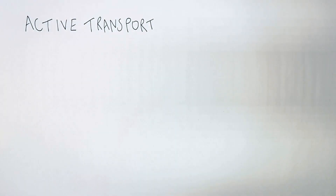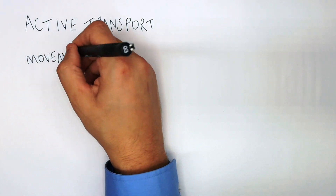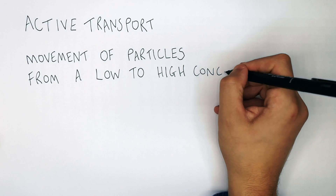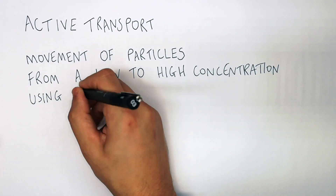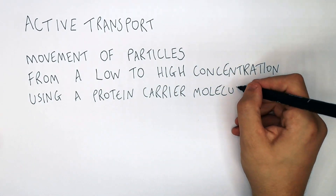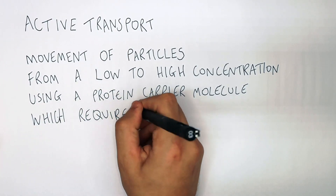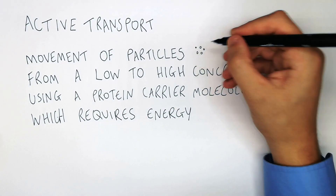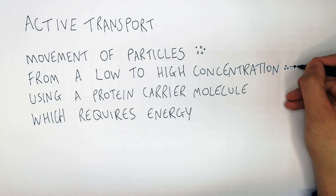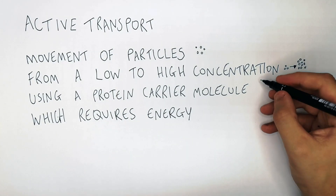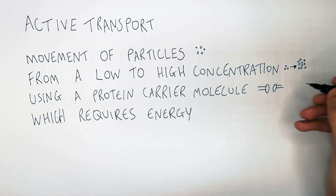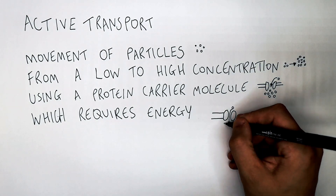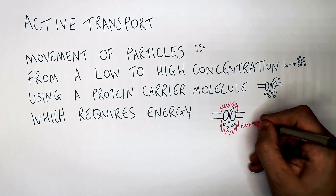Active transport is the movement of particles from a low to high concentration using a protein carrier molecule which requires energy. It uses a protein carrier molecule embedded in the cell membrane and it requires energy from aerobic respiration.